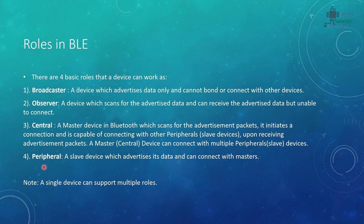The peripheral is the slave device, and it advertises its data to connect with the master. It essentially broadcasts 'I'm here, ready for connection.' If the central wants to connect, it sends a connection request. Our mobile phones are typically central devices, and our sensor devices are peripherals. Devices like the NRF52832 or NRF52840 can support multiple roles simultaneously — central and peripheral at the same time, or even observer and broadcaster.